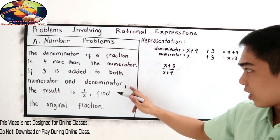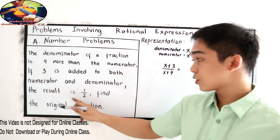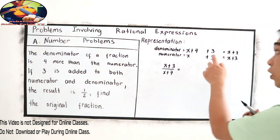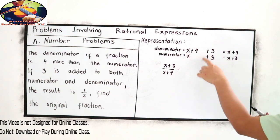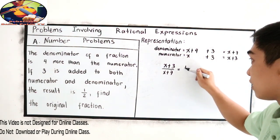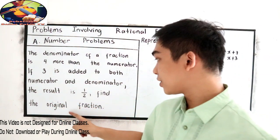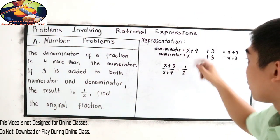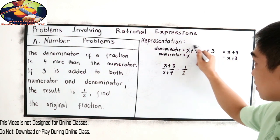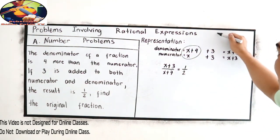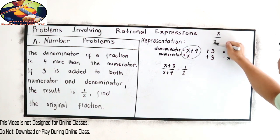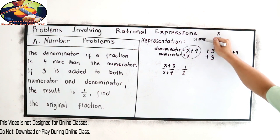Let us continue our given. The result is one-half. So if we're going to add three to the numerator and denominator, the result is one-half. Find the original fraction. So our original fraction is our representation x over x plus four. So this is our original fraction.